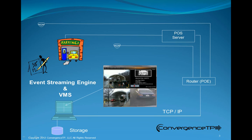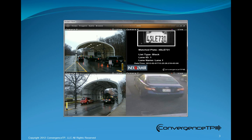When the license plate is read, a copy of the license plate data is sent to the event streaming engine. Upon receipt of the license plate data, the ESE creates an industry standard access camera stream which the ESE then sends to the VMS system for immediate display and/or to be written to the video recording system. The ESE camera stream is written to the video recorder time synchronized to any and all cameras attached to the video system.